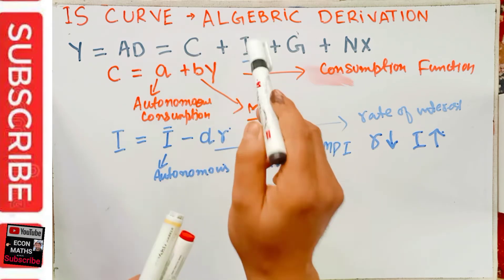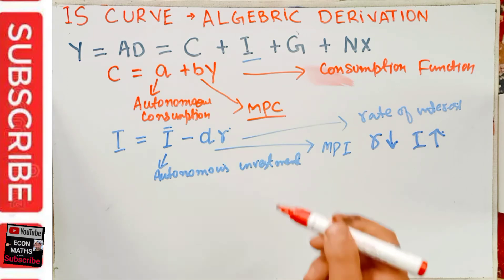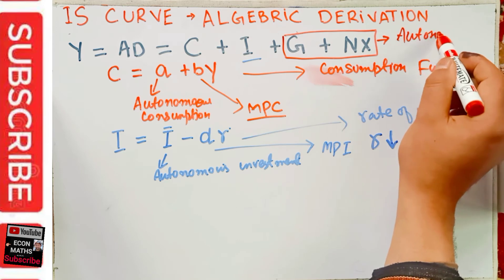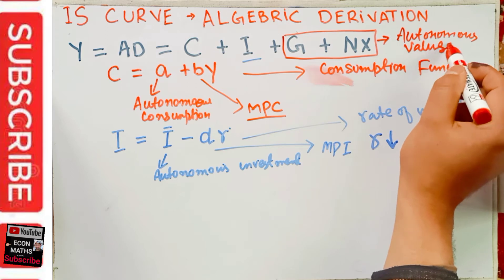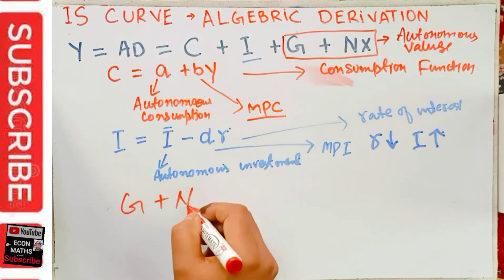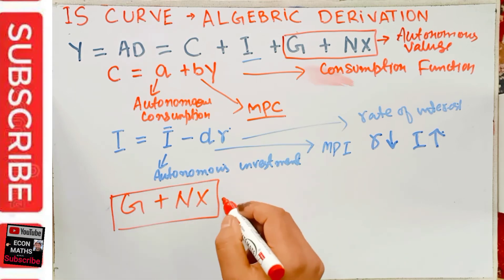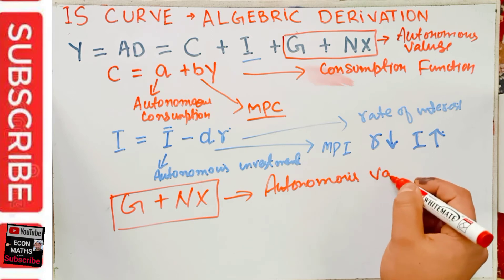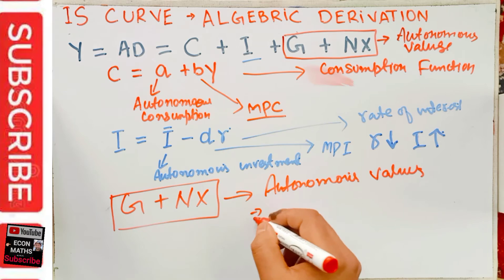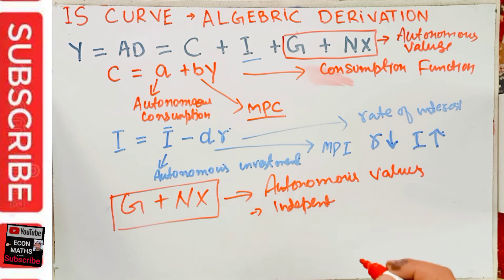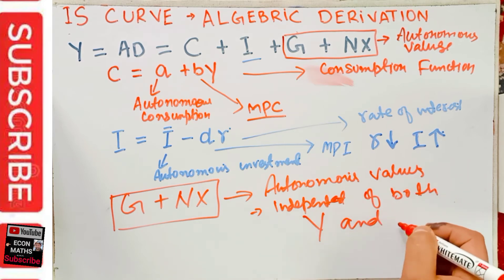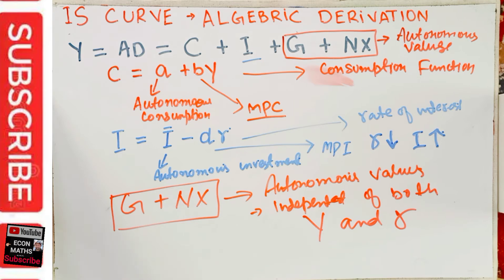We assume that government spending G and net exports NX are autonomous variables — that is, they are independent of both income and the rate of interest. So G plus NX are autonomous values that do not depend upon the income level or rate of interest.